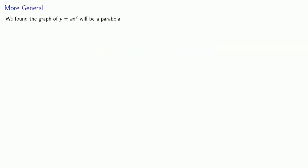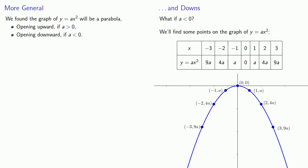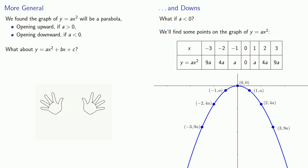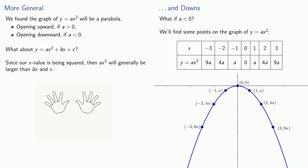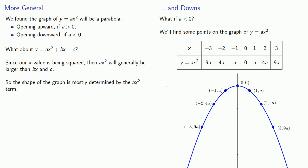Last time we found that the graph of y equals ax squared will be a parabola opening upward if a is greater than zero, and opening downward if a is less than zero. But that was for our drastically simplified second degree polynomial. What about y equals ax squared plus bx plus c? We'll need to do a little hand-waving here. Since our x value is being squared, ax squared will generally be larger than bx and c, and so the shape of the graph is mostly determined by the ax squared term.